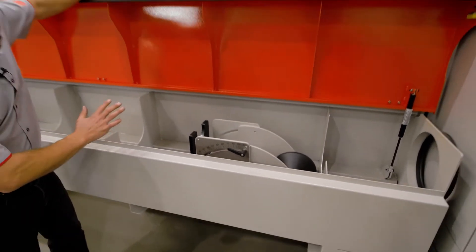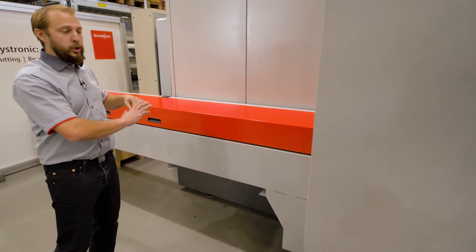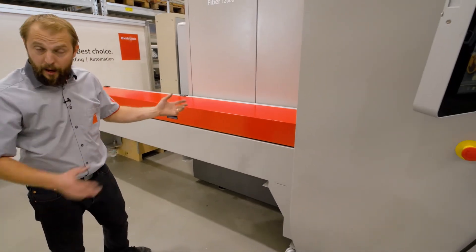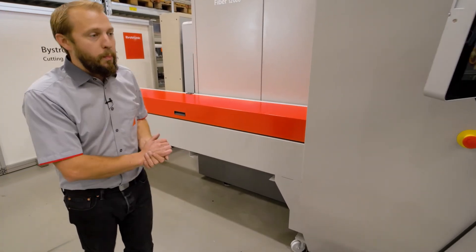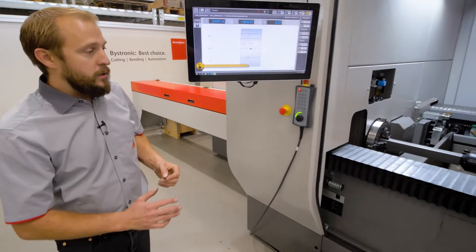This box here has two points. One point is to make sure that we have no radiation of the light coming outside. And second, to support your tube perfectly for cutting.